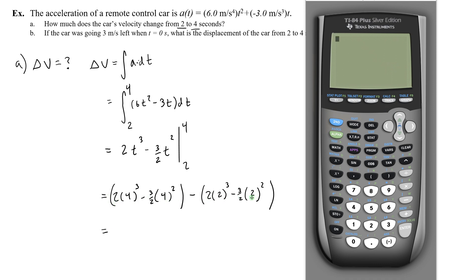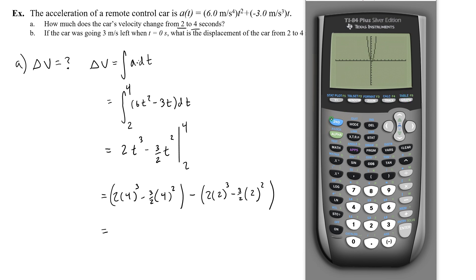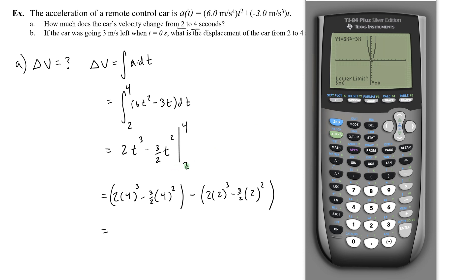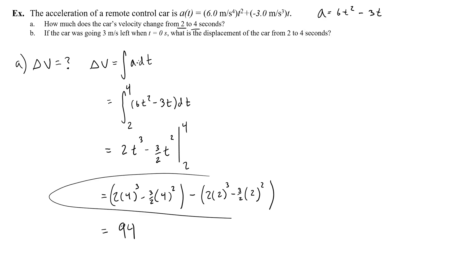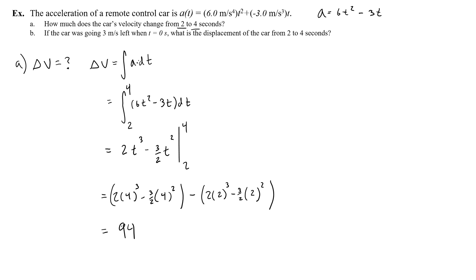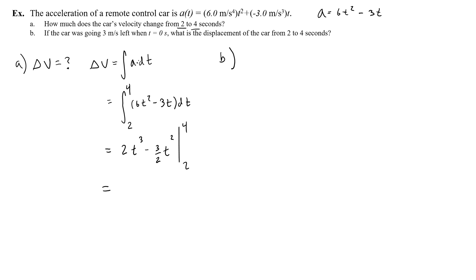You can quickly check your algebra by going to y-equals and graphing the acceleration equation — so 6x-squared minus 3x. Then go to 2nd Calc, option 7, which integrates from the lower limit of 2 to the upper limit of 4. I get 94. So the change of velocity from 2 to 4 seconds is 94 meters per second.